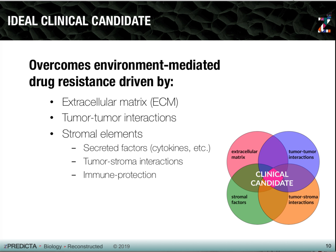When we look at an ideal clinical candidate, such a compound is a drug that can overcome the environment-mediated drug resistance. Such resistance is driven by multiple components within the tissue microenvironment, such as the extracellular matrix, tumor-tumor interactions, and various stromal elements found within that microenvironment, such as secreted factors like cytokines and chemokines, different stromal cells like fibroblasts, and immune elements that often offer protection against anti-cancer drugs.